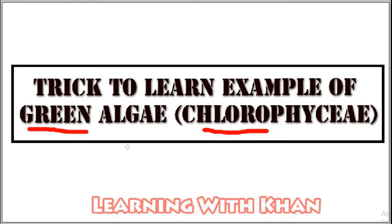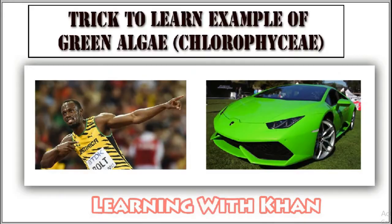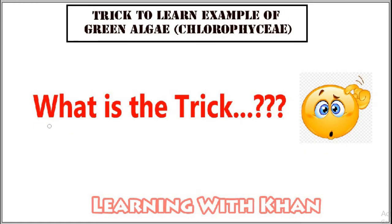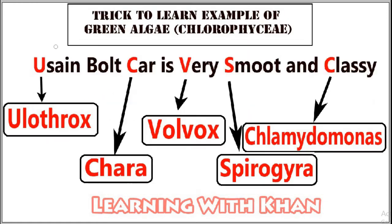Before we start our trick, I need you guys to relate these two pictures. This is a picture of Usain Bolt, the fastest man in the world, and this is his classy smooth car, which is green colored. Remember, the green color indicates that we are talking about green algae.